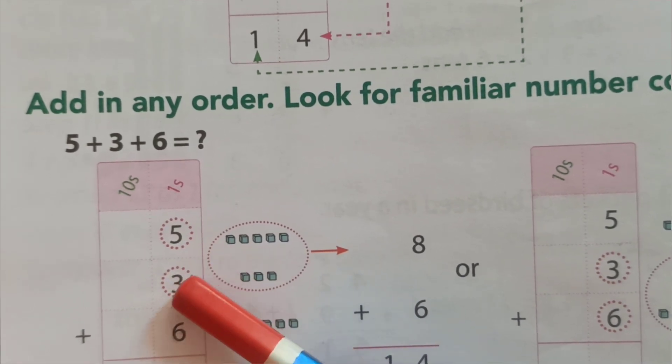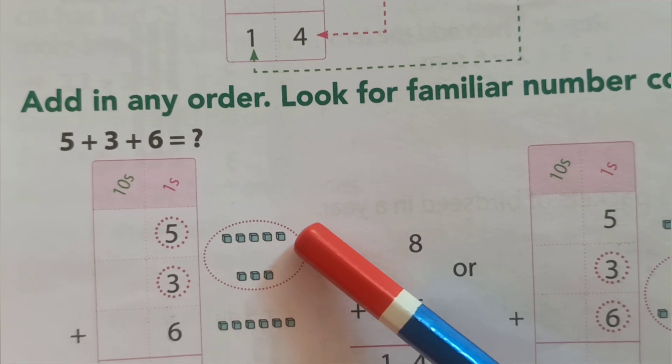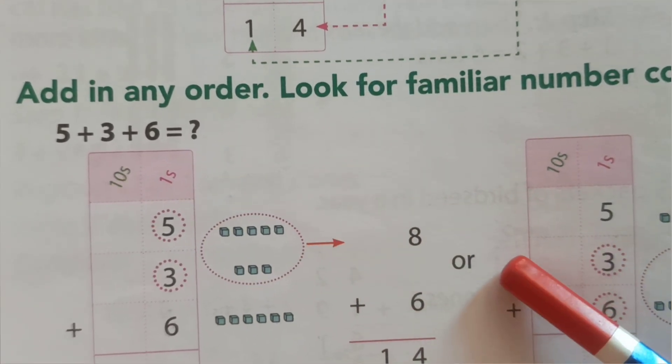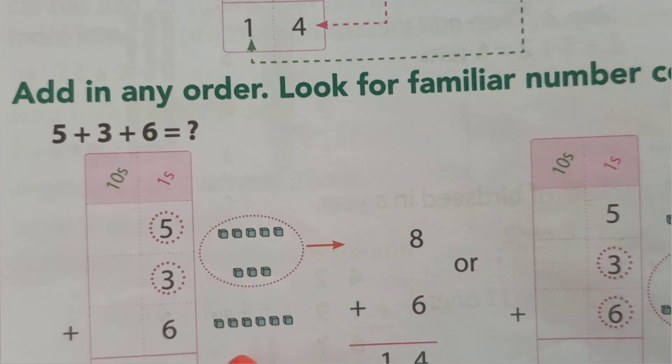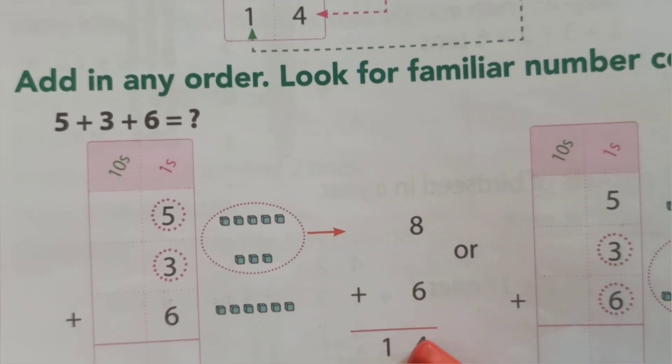5 ones plus 3 ones plus 6 ones. See, 5 plus 3, 8. See, 8 plus 6. How many? 14.